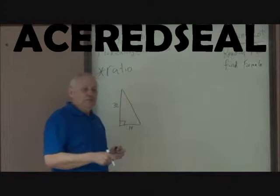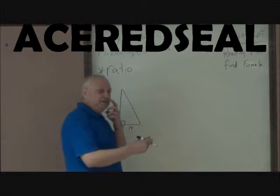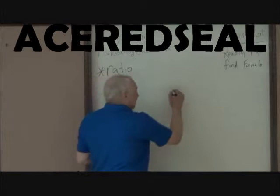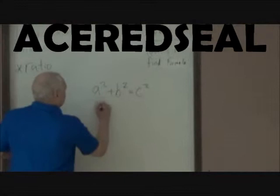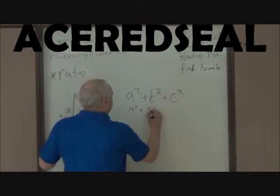What formula do we start with? It's a 3-4-5 triangle, but what is the formula for that? It's a square root — A squared plus B squared equals C squared. C is always the side across from the right angle. So A = 14, B = 32. 14 squared plus 32 squared equals C squared.